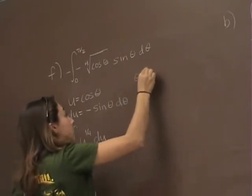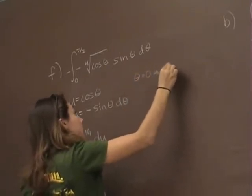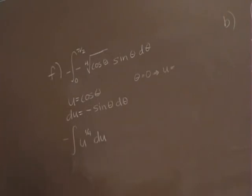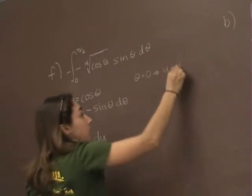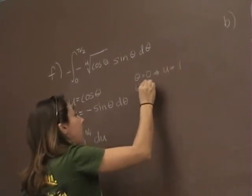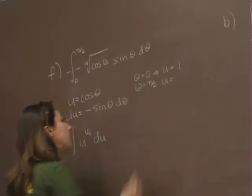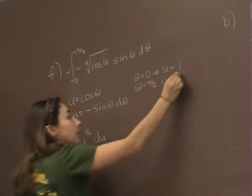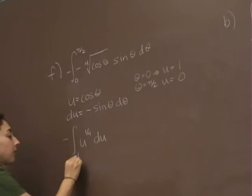How are those limits going to change? Well, theta equals 0 implies that u should equal how much? 1. Cosine of 0 is 1. And when theta is equal to pi over 2, u should equal how much? 0. So I'm going to have the integral from 1 to 0, not from 0 to 1.